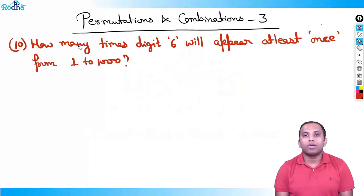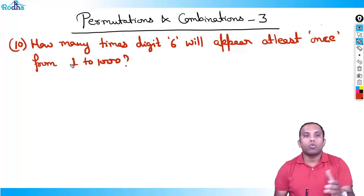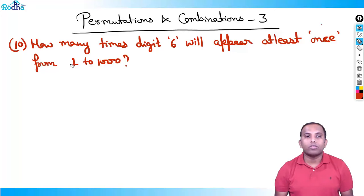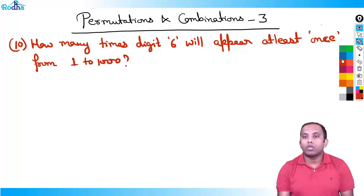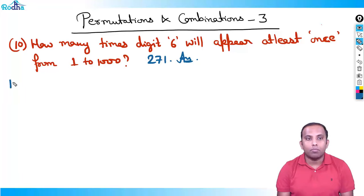Hi everyone, my name is Ravi Prakash, and welcome to the third class of Permutations and Combinations. In the second class, we discussed how many times digit six will appear from one to one thousand. We solved this question by two methods and the answer was 271.